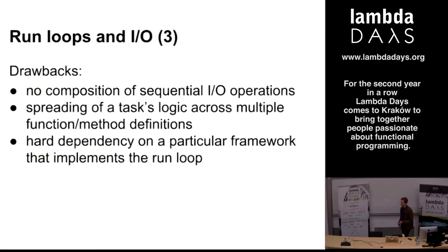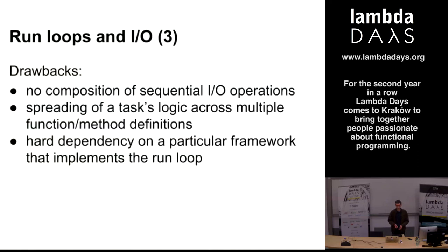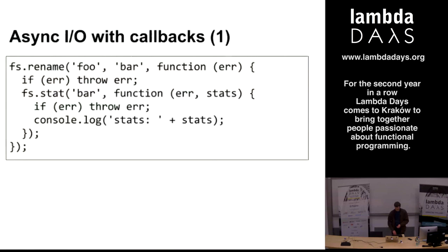Some drawbacks of run loops: the most inconvenient thing is that it is difficult to do composition. If we want to perform two I.O. tasks in sequence, we need to first wait for a callback once the first task is finished, and only after that can we start the second task. The logic of our operation tends to be spread across multiple method definitions, which is not very pleasant. This also applies to animations in a graphical user application, because animations also work asynchronously.